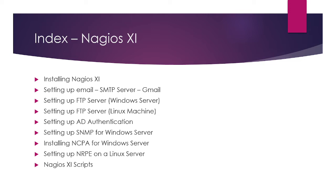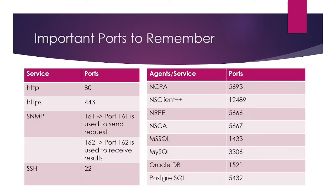So what are the ports to remember? HTTP uses port 80, HTTPS 443, SNMP 161 — port 161 is used to send a request, port 162 is used to receive results, and SSH (Secure Shell) uses port 22.